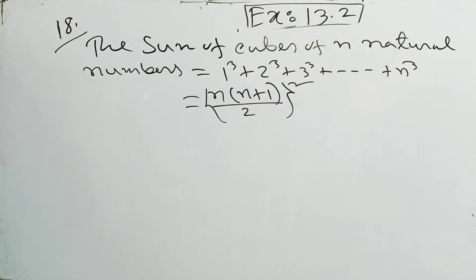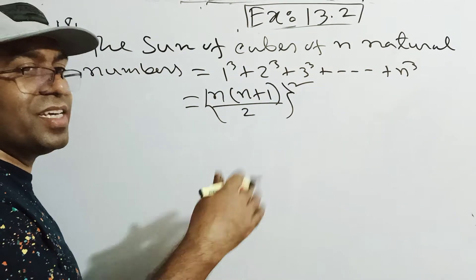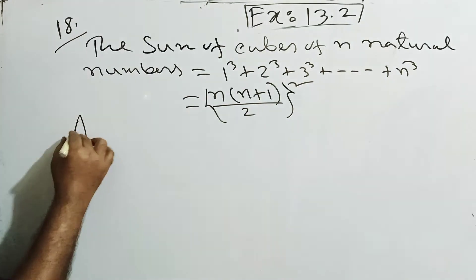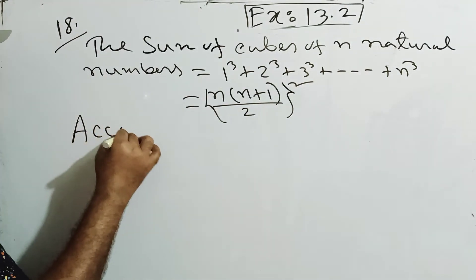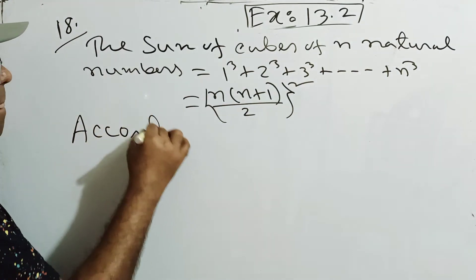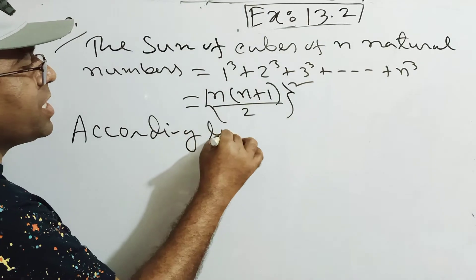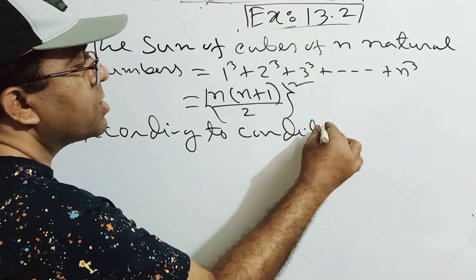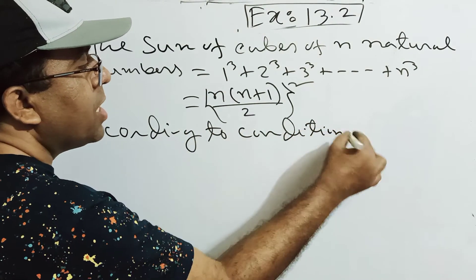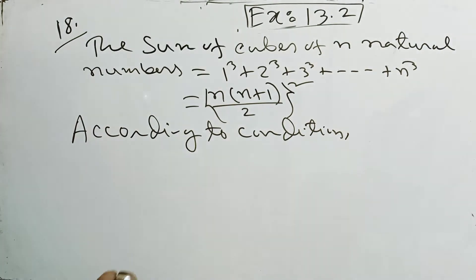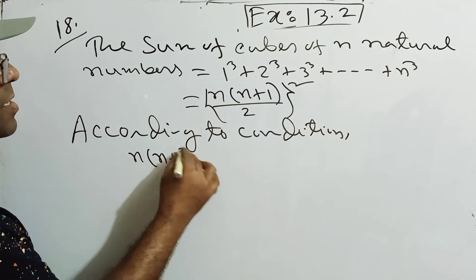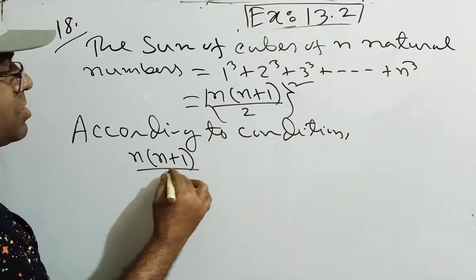Sum of cube of first N natural numbers. According to the condition, we have to keep N(N+1) by 2.